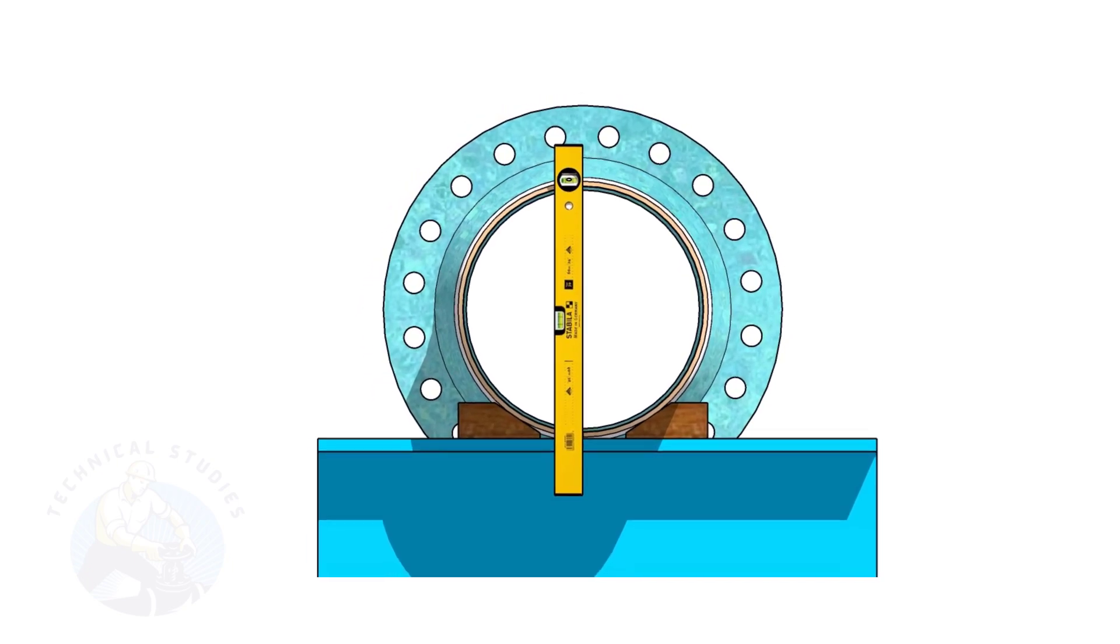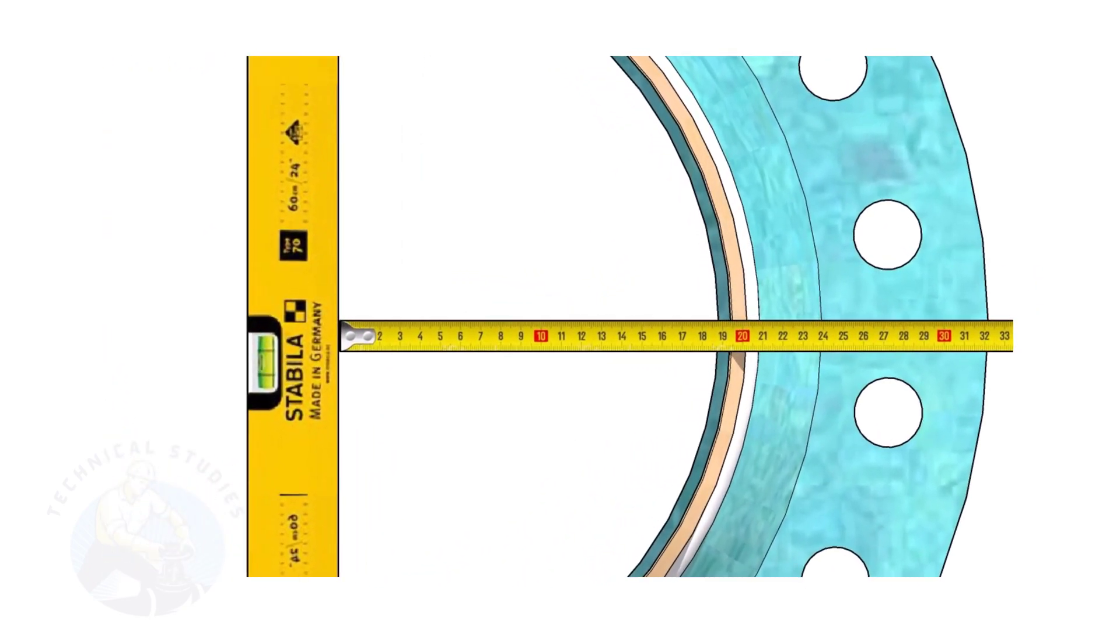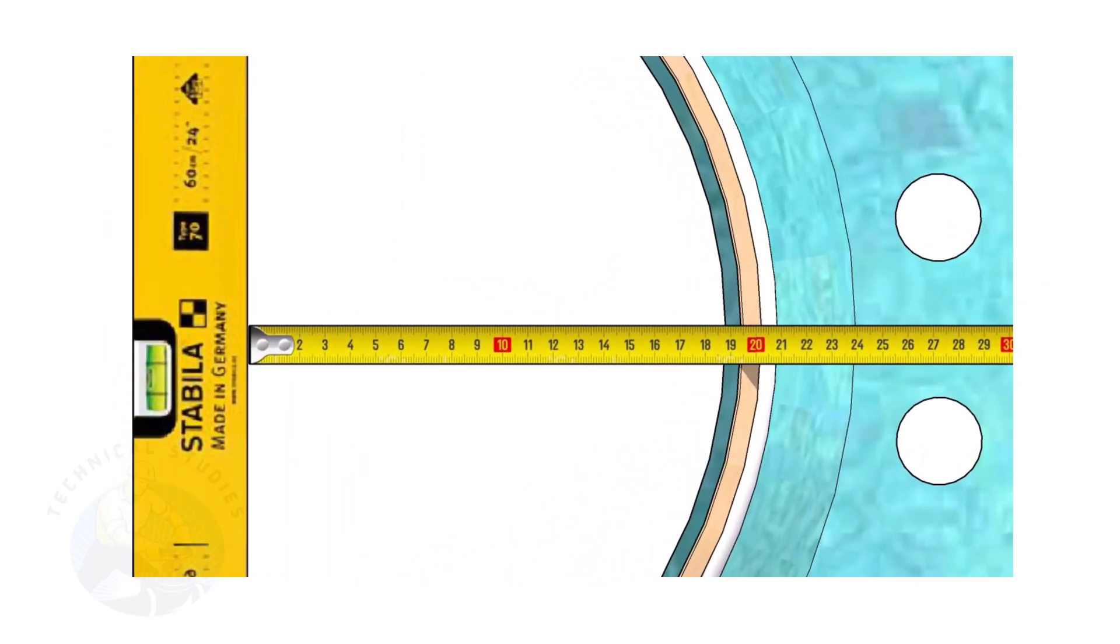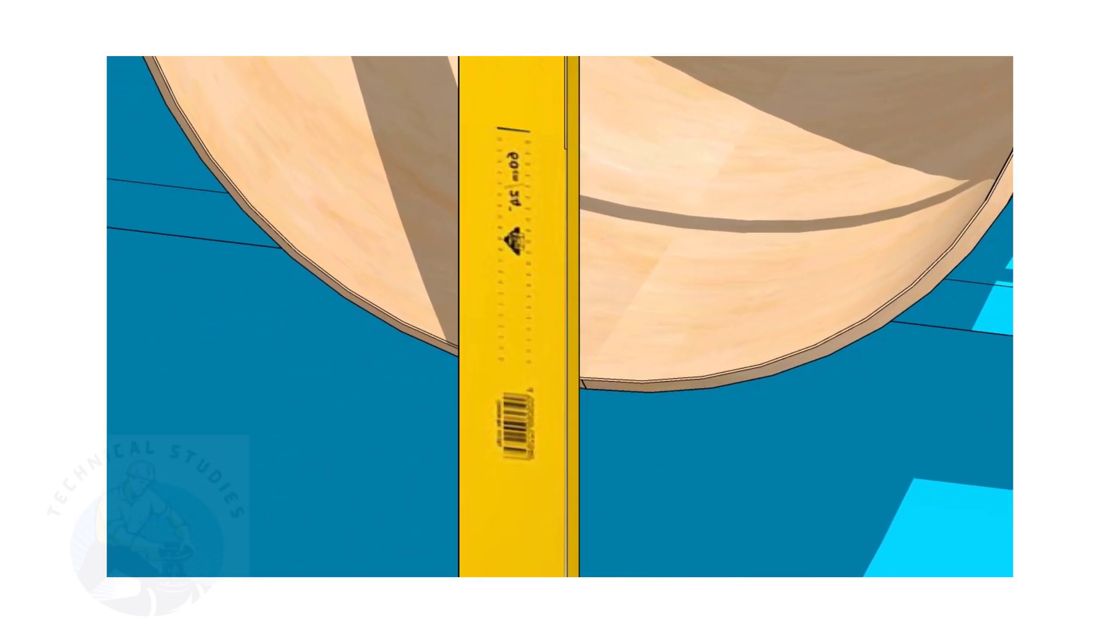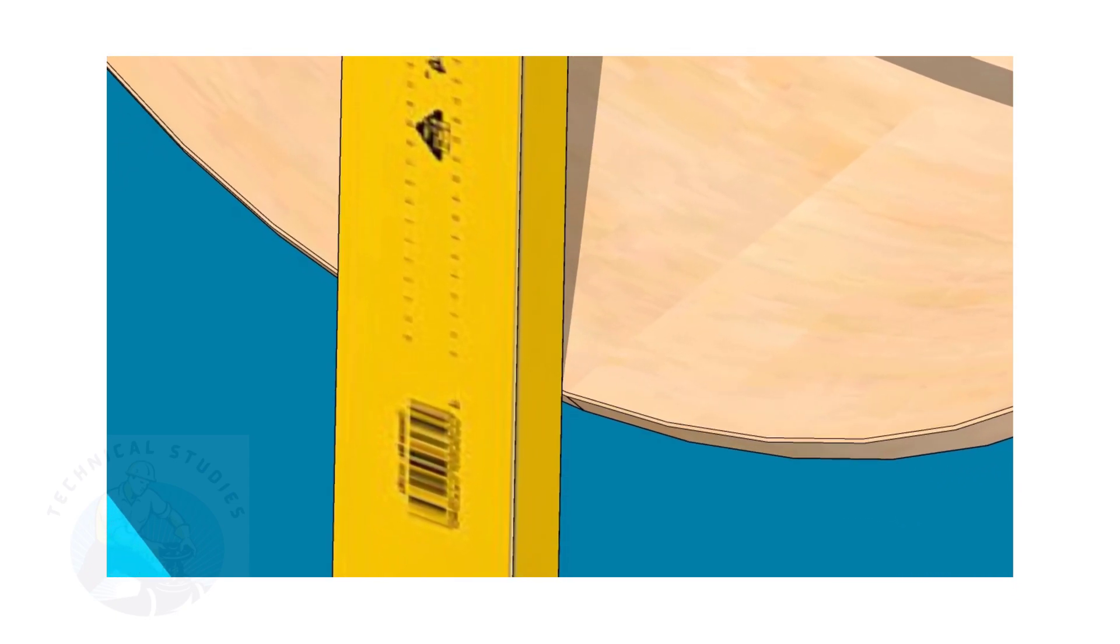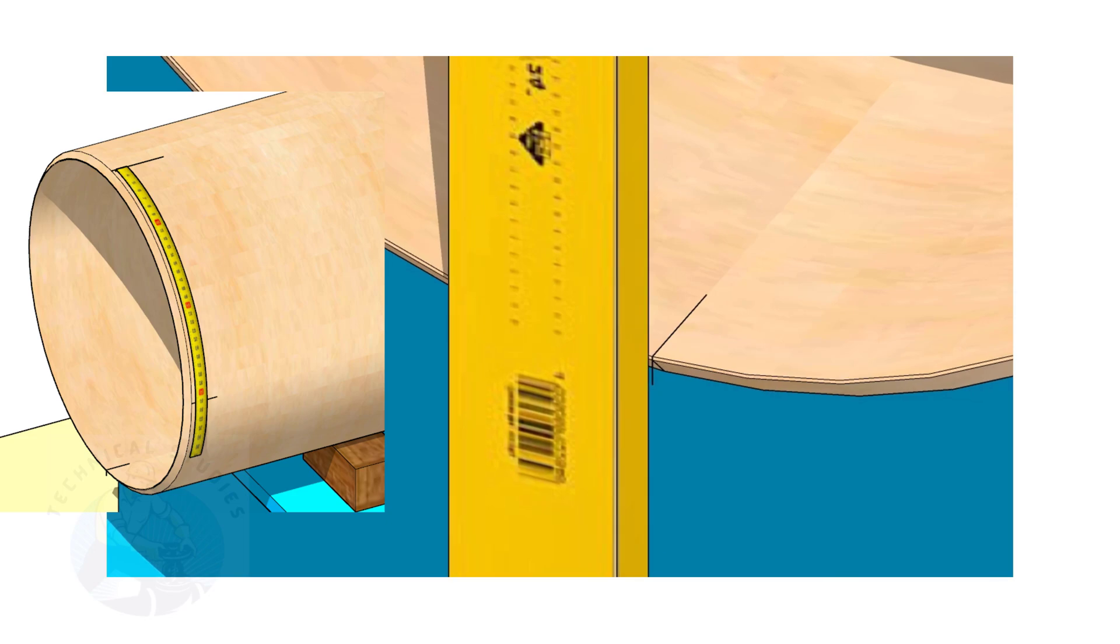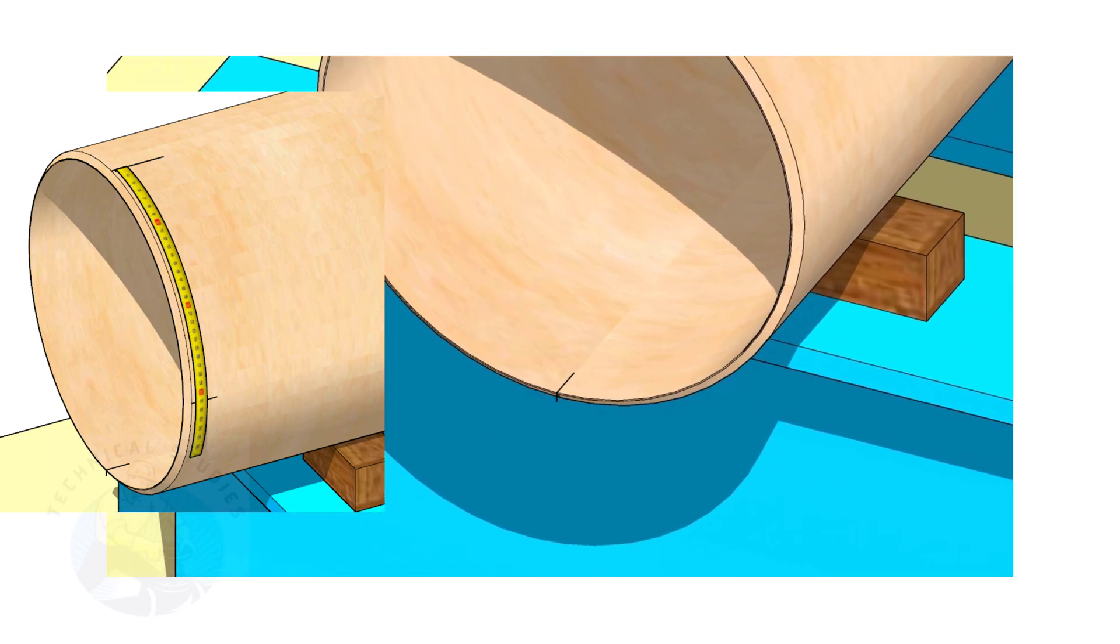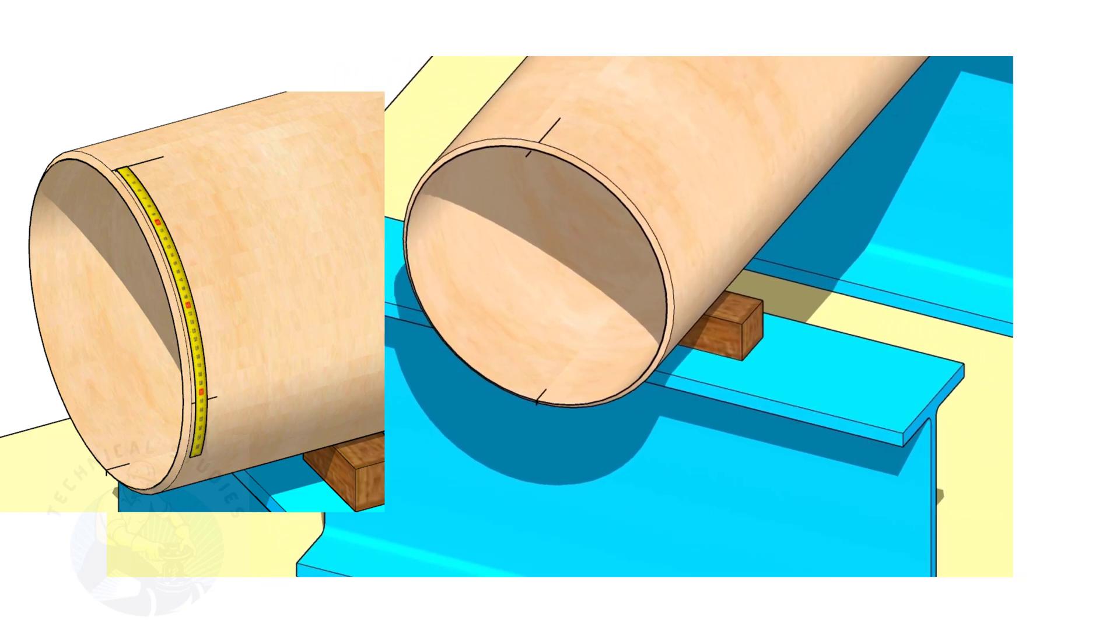Hold the spirit level vertically and transfer the top center mark to the bottom side as shown. Mark the quarter circumference on both sides of the pipe.